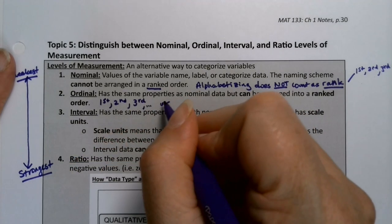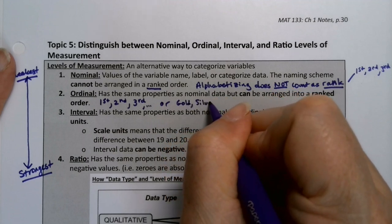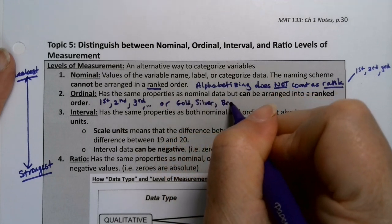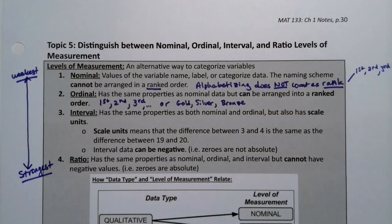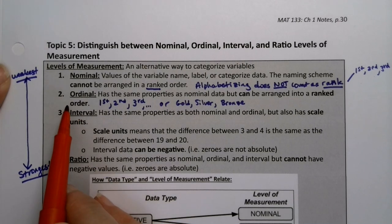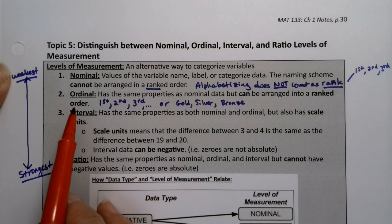So ordinal is dot, dot, dot, or gold, silver, bronze, if we're talking about the Olympics, for example. That's ordinal. It has an order that can be ranked, but that's about it. There's not much else going on there. So you can't do other meaningful calculations.